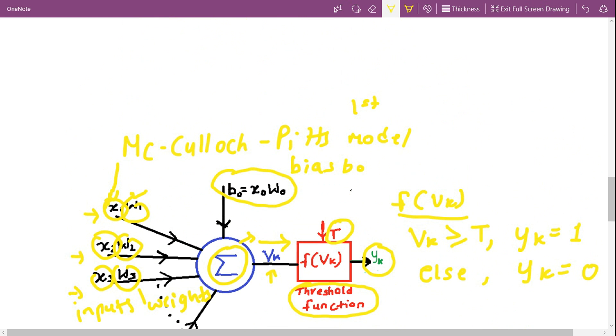So let me just draw the graph between input and output. vk is our input, yk is our output. Let's consider the threshold value to be equal to 0. The input can range from minus infinity to plus infinity. When the input vk is negative, the output yk will be 0. When it is positive, the output will be 1.